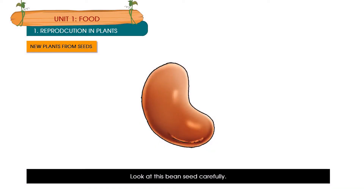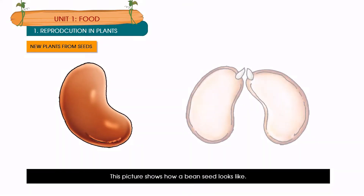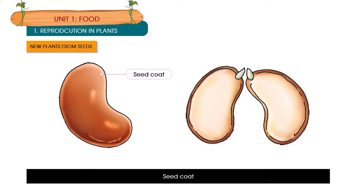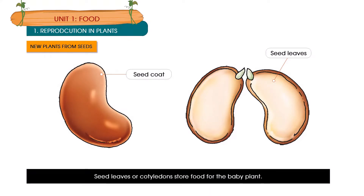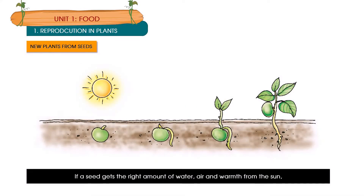Look at this bean seed carefully. This picture shows how a bean seed looks. It has a seed coat and seed leaves. An outer covering called the seed coat protects the baby plant inside the seed. The seed coat has a tiny hole through which the seed gets water. Seed leaves, or cotyledons, store food for the baby plant.